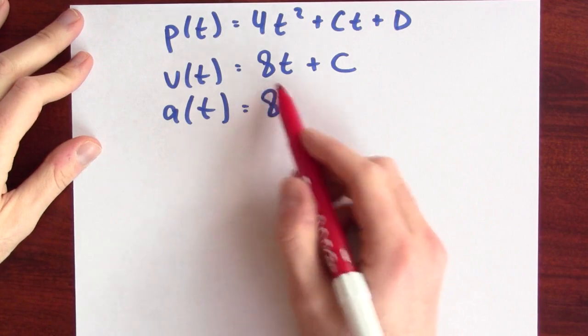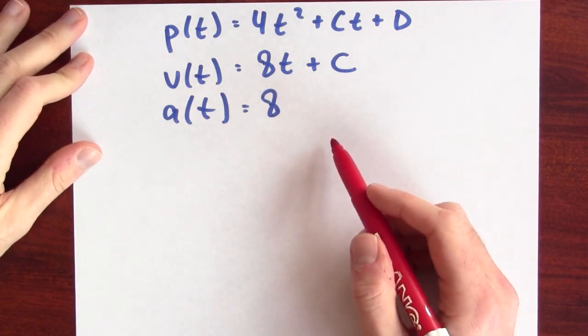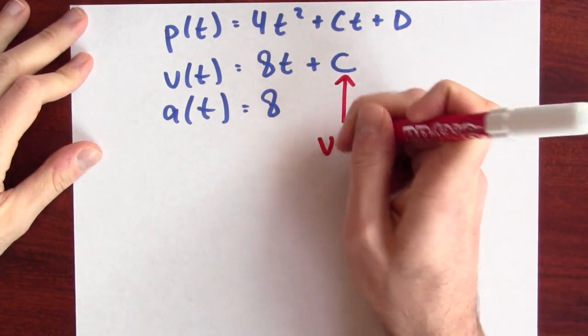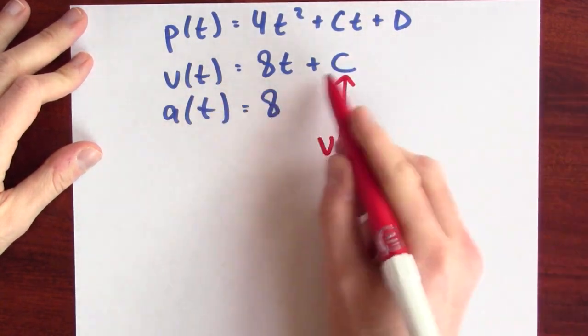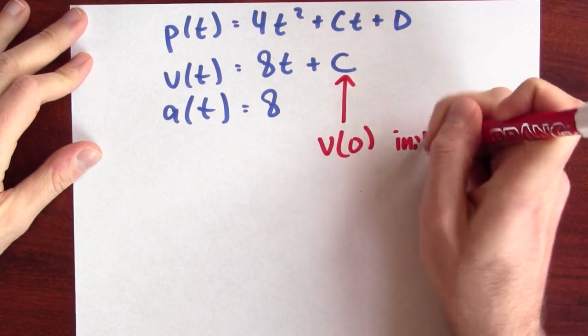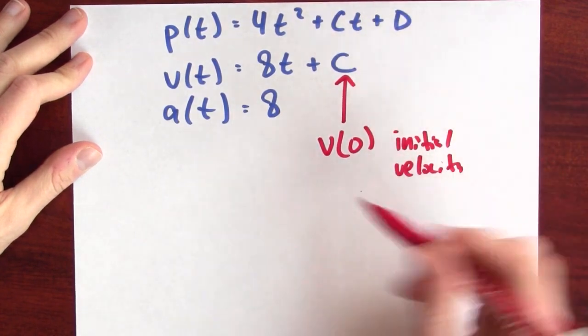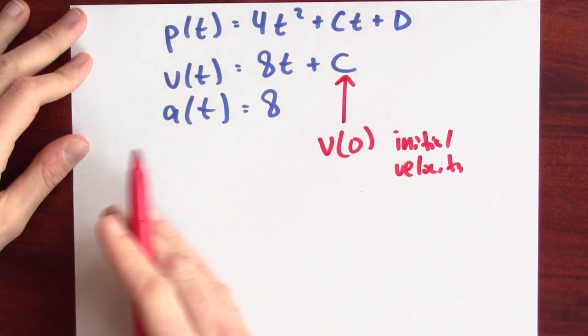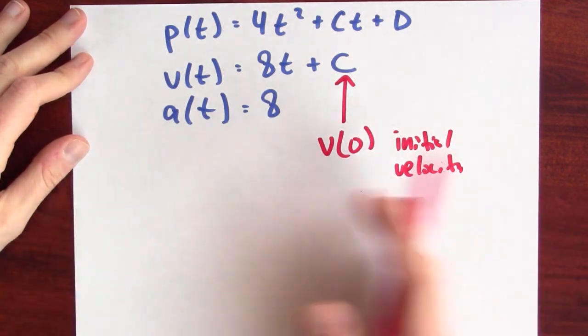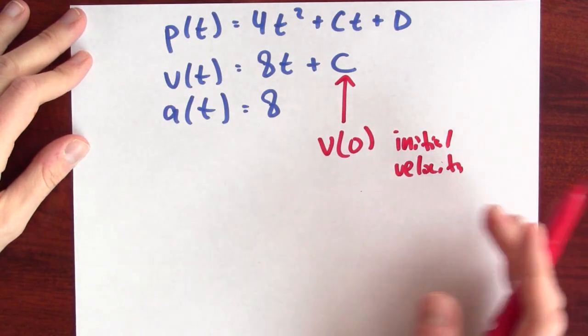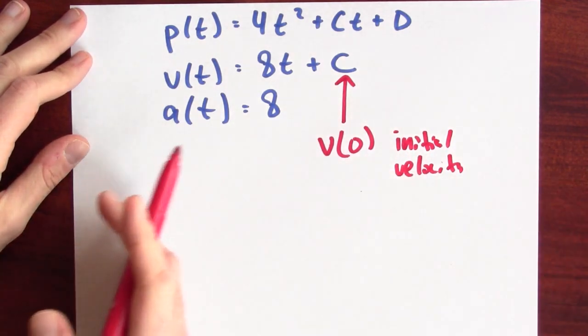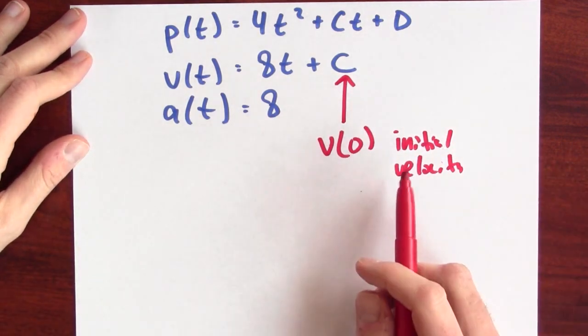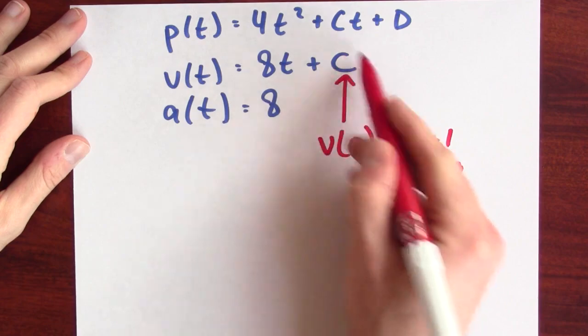Just knowing that my acceleration is 8 units per second squared doesn't tell me my initial velocity. This quantity c here is really v of 0, my initial velocity. And I could be accelerating at a rate of 8 units per second squared, but starting with any of a range of possible initial velocities. I could be going really fast at first or really slow at first, but still always accelerating at 8 units per second squared. So, knowing this doesn't nail down c.